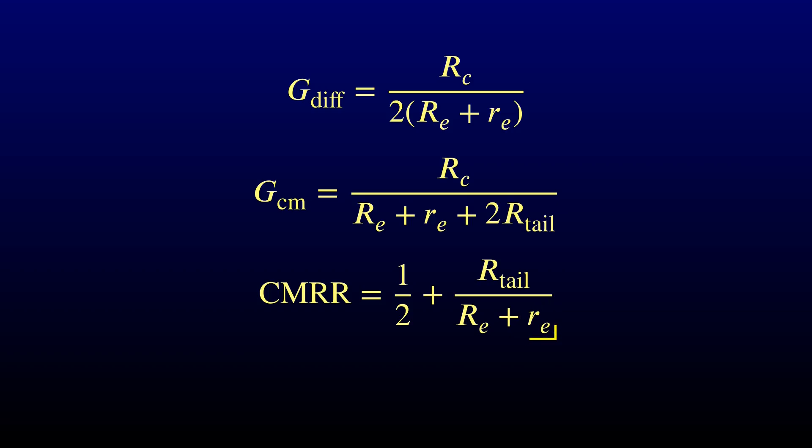We can't do anything about the intrinsic emitter resistance since it's determined by the quiescent current. So the only way we can get a better common mode rejection is to use a bigger tail resistor. But we chose the tail resistor to deliver the desired quiescent current from the negative supply. How are we going to make that any bigger without messing up the quiescent point? We seem to be stuck. Unless we can come up with another way to deliver the quiescent current that has a high output impedance.